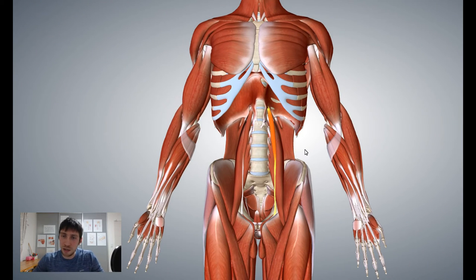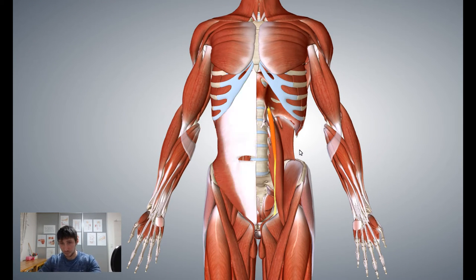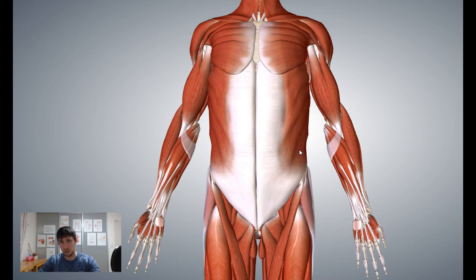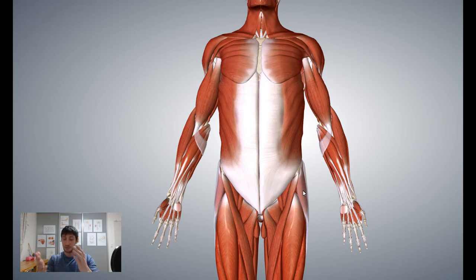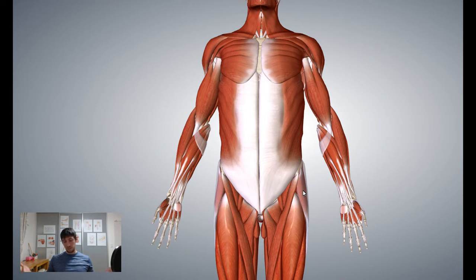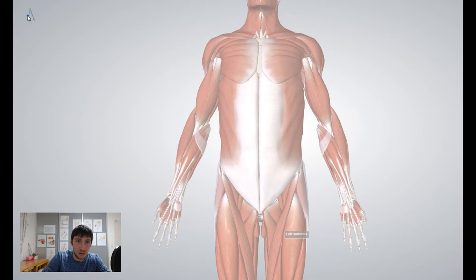Let me highlight these one by one. So the anterior oblique system — for example, left side shoulder towards right side hip and a little bit down the thigh. We have this diagonal pattern from the front. Anterior means front of the body, oblique means diagonal — so anterior oblique system.